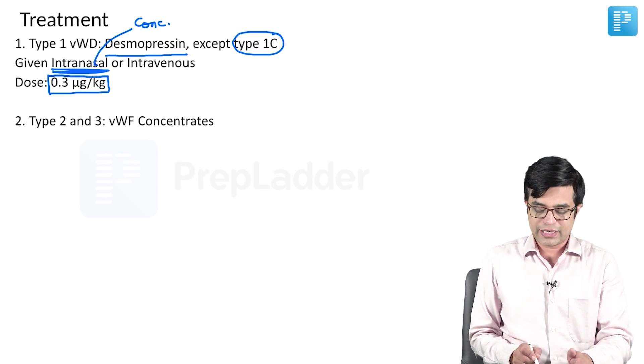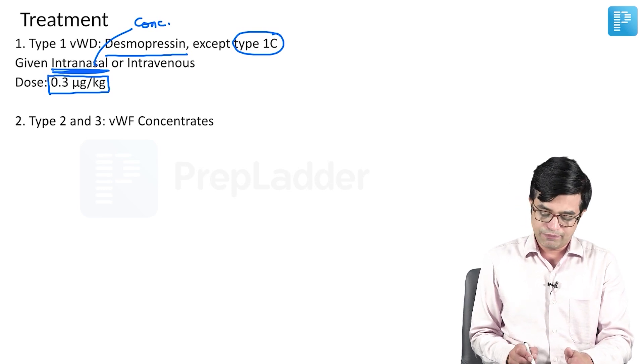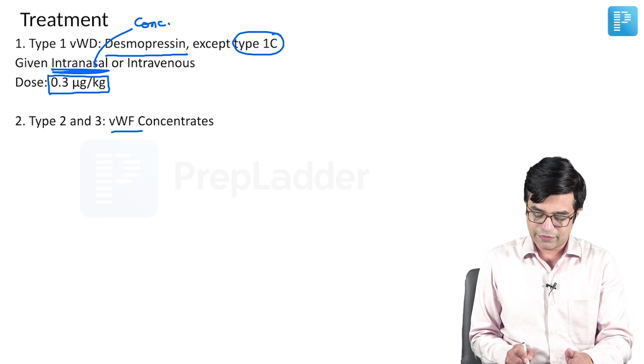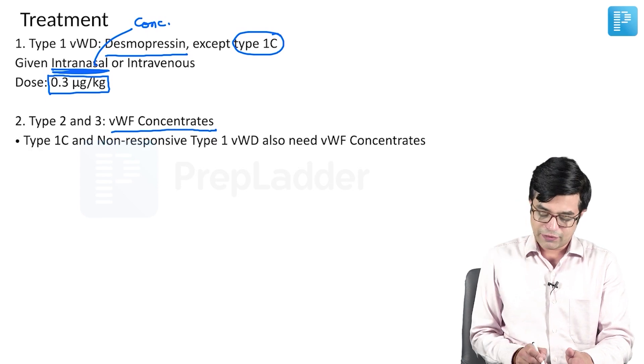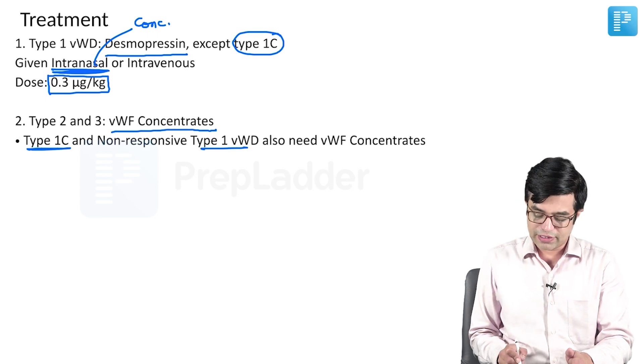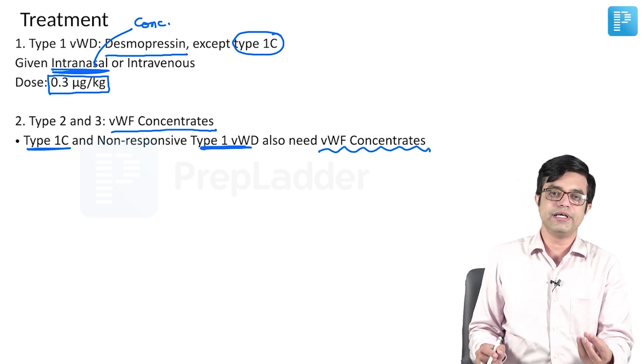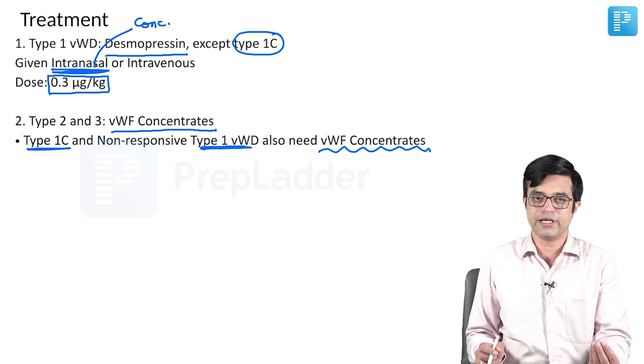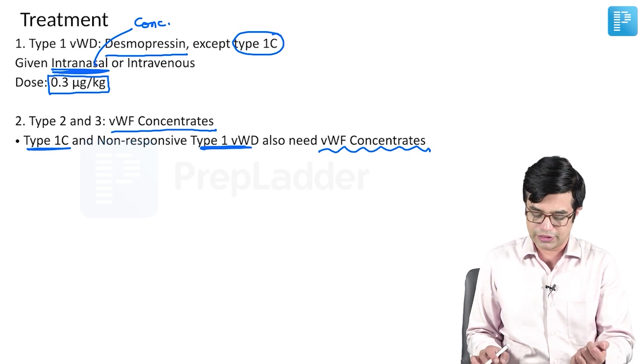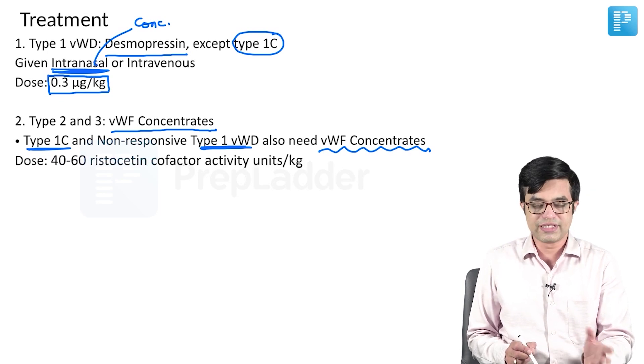Second is type 2 and type 3. Here, we will require von Willebrand factor concentrates. Type 1c and non-responsive type 1 von Willebrand factor disease will also need concentrates - that is the ready-made active form of von Willebrand factor that you will have to transfuse in these patients.